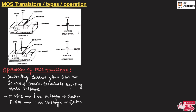Before applying voltage across the gate, there is no connection between drain and source. Once the required voltage is applied across the gate, the majority charge carriers form a region below the gate, creating a path between drain and source so that current can easily flow. This operation applies to both N-type and P-type transistors.